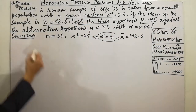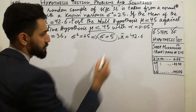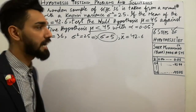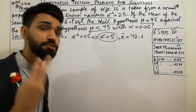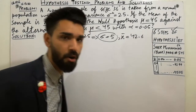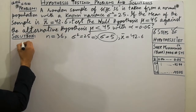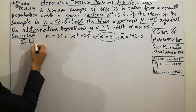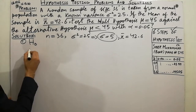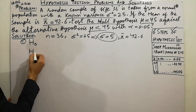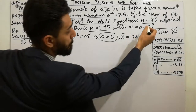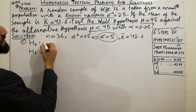I will solve this problem using the six steps I already told you about. Step one: write the null hypothesis H-naught and the alternative hypothesis H1. The null hypothesis is H-naught: mu = 45.